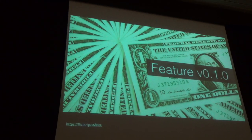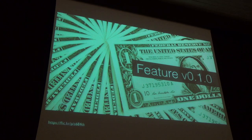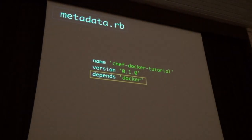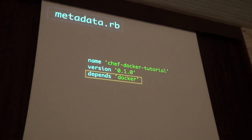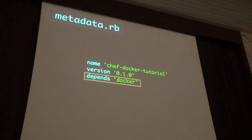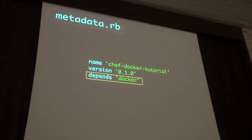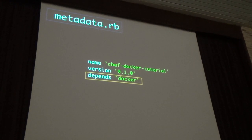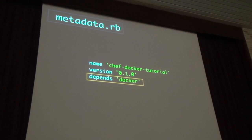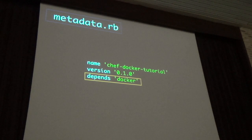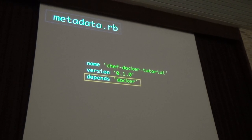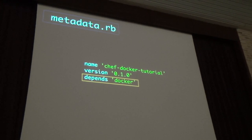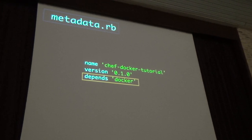This is kind of how it's going to go. The first thing is we're going to write our first feature — basically a hello world Chef recipe to drive Docker. The first thing you do in your cookbook is depend on the Docker cookbook. The Docker cookbook is a library cookbook, and you depend on it and get access to the resources that ship in the cookbook.